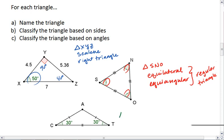Lastly, we have triangle CAT. Looking at the sides of CAT, we have two congruent sides and one that's not congruent, which makes this triangle isosceles.